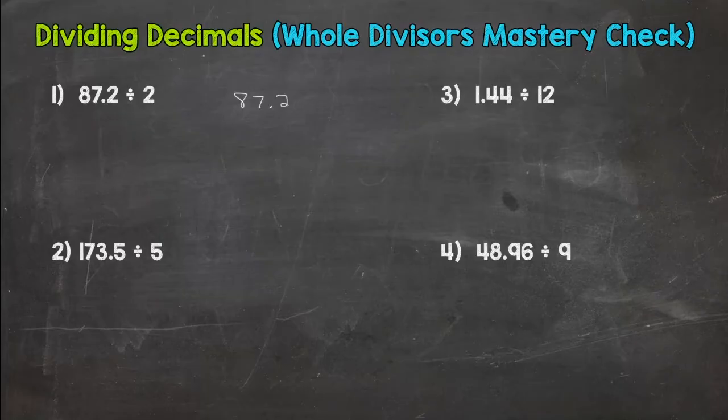We have 87 and two tenths divided by two. Remember when you see a division problem from now on, you should ask yourself, is my divisor or outside number whole? If it's a yes, bring that decimal straight up. And then we go through our process.